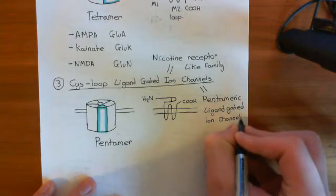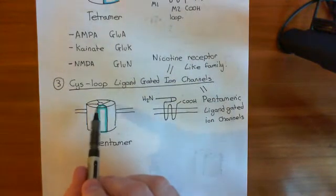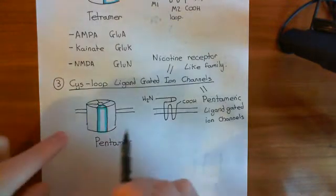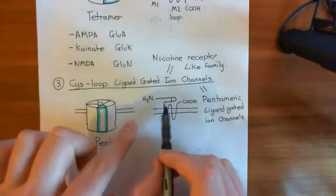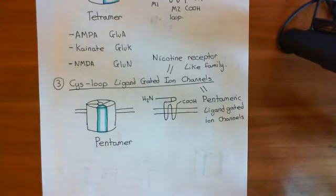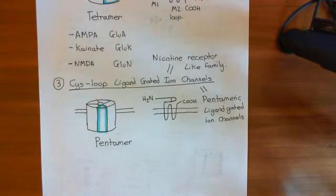All of those names refer to the same receptors — receptors where five protein subunits make up the whole receptor, each with a membrane-spanning topology featuring a cis-loop followed by four membrane-straddling domains, and the carboxylic acid terminus on the extracellular aspect. Let's now talk about examples of these cis-loop ligand-gated ion channels, or pentameric ligand-gated ion channels, and their neurotransmitters.